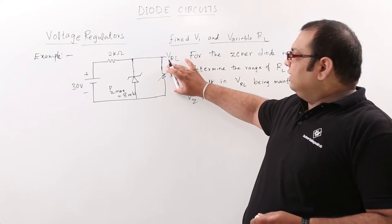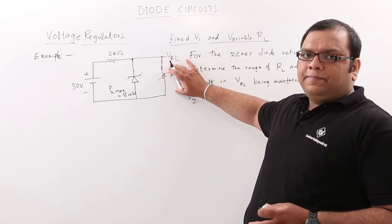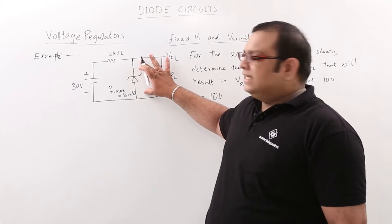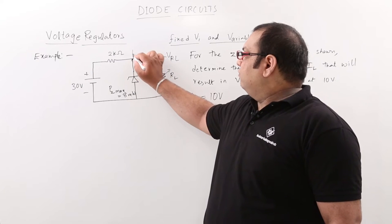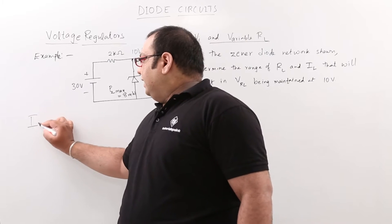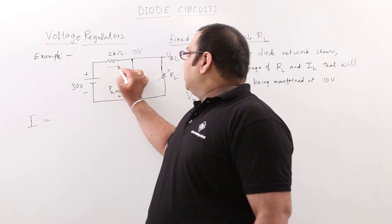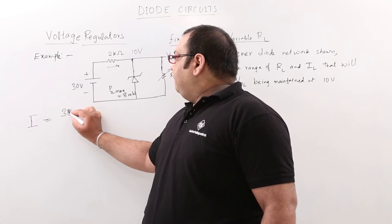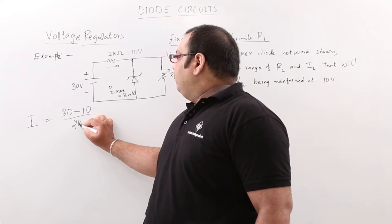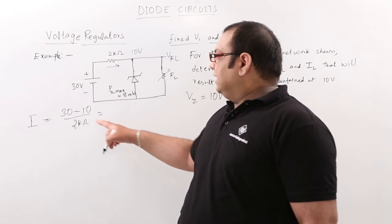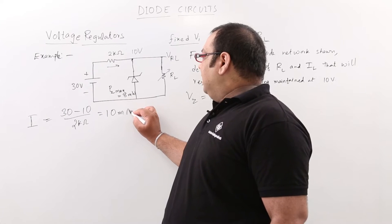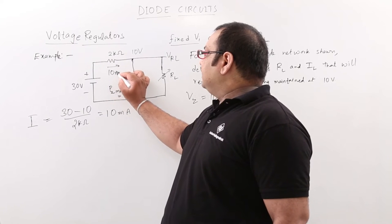To find the range of RL, observe that this voltage is fixed at 10 volts. When this voltage is exactly 10 volts, we can calculate the total current I as: I = (30 minus 10) divided by 2 kilo ohms, which equals 10 milliamps. So this 10 milliamps is fixed.